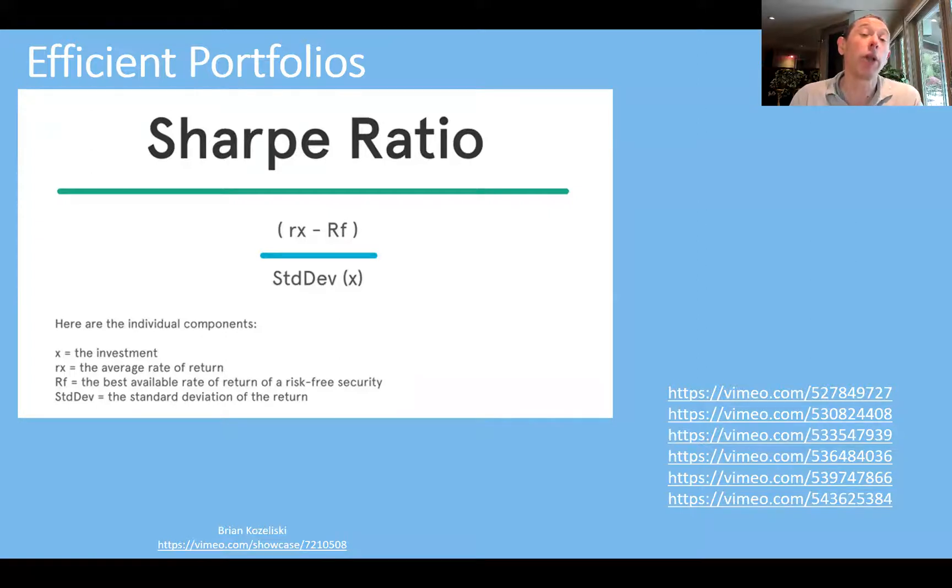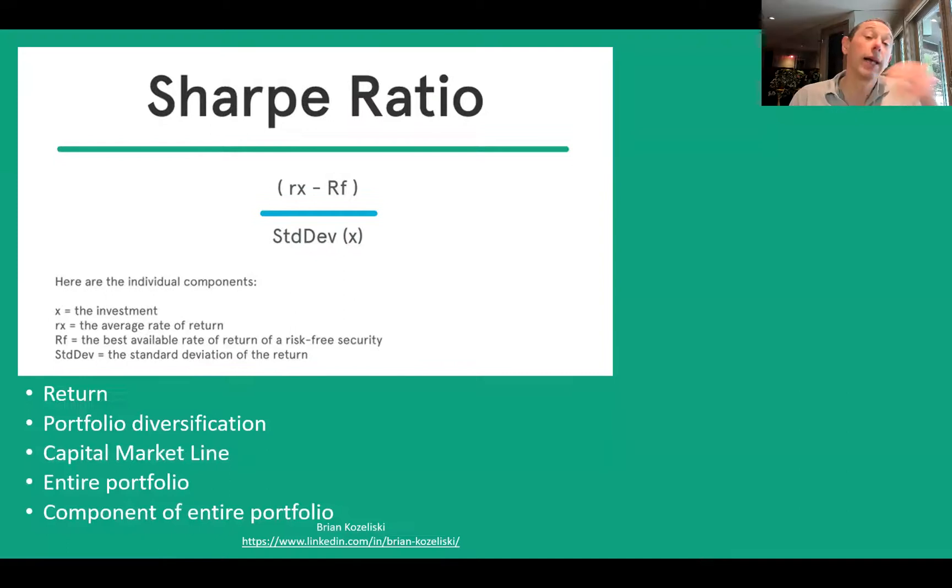Help us understand that Sharpe ratio better. Well, I'm going to do one better. I'm going to talk about a number of different performance measures. Let's go ahead and start with the Sharpe ratio. Here we're taking our portfolio return minus the risk-free rate and dividing by standard deviation. So this is kind of a measure of portfolio diversification. It's related to the capital market line. I have a video on the capital market line. Check it out by following that link right there.